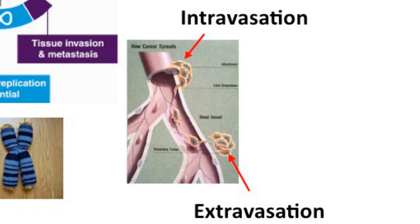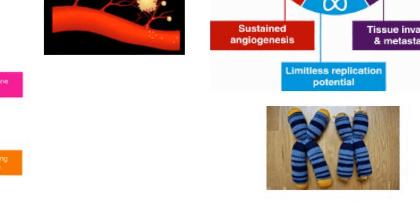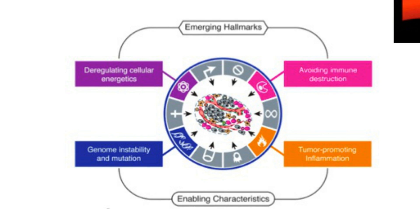Finally, tumour cells often develop an aggressive invasive phenotype whereby they become more motile and can move to a distant site. With over 90% of cancer-related deaths resulting from secondary metastasis and not from the primary tumour, understanding this mechanism is key to designing future chemotherapies. Next, we will look at the two enabling characteristics and the two emerging hallmarks described by Hanahan and Weinberg in their follow-up article, Hallmarks of Cancer: The Next Generation.